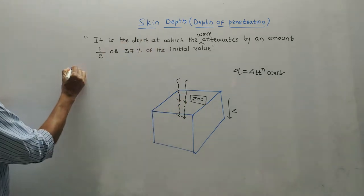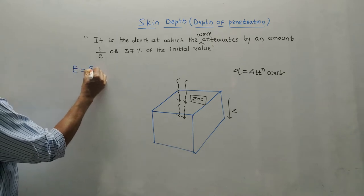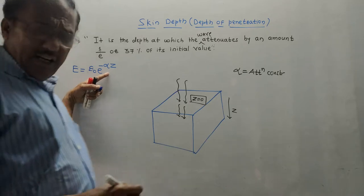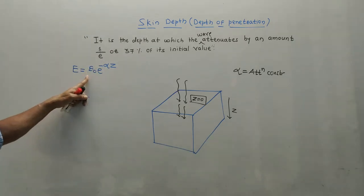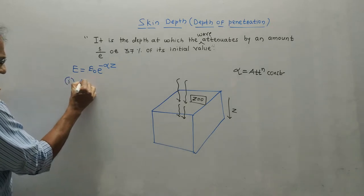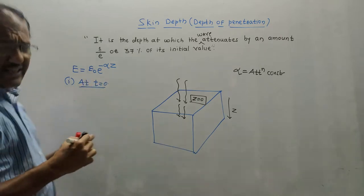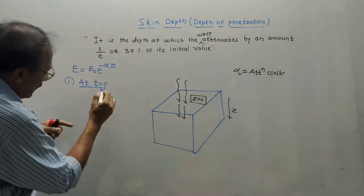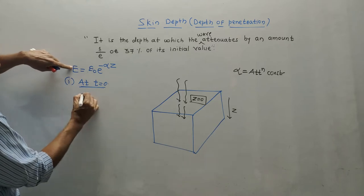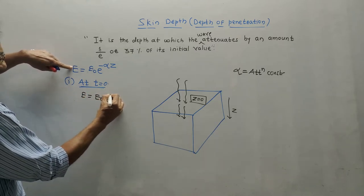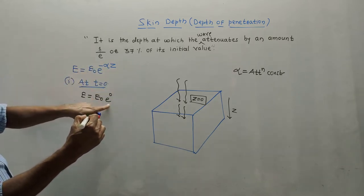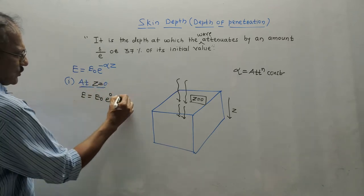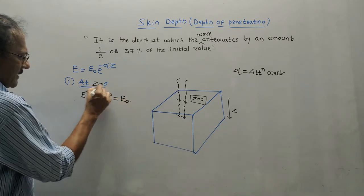Consider the equation of the wave as e equals e0 times e raised to minus alpha z. Here, alpha is the attenuation constant, z is the distance, and e0 is the initial amplitude of the wave. At the first condition, z equals 0, which indicates the condition on the top surface of the conductor. Putting z equals 0 gives e raised to 0, which equals 1. So on the surface, e equals e0.